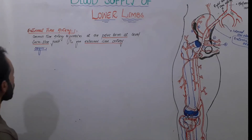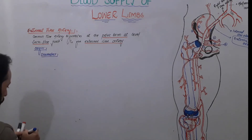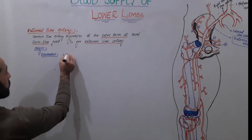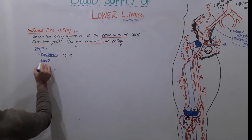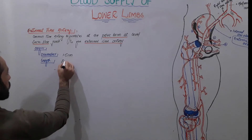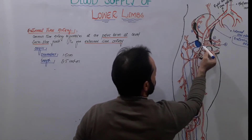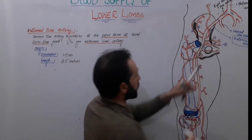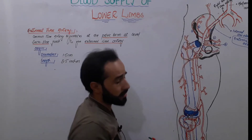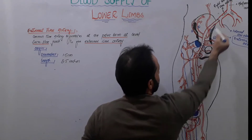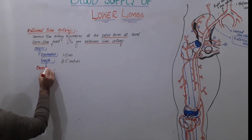What is the diameter of this artery? The diameter of the external iliac artery is about 1.5 centimeters. And what is the length of this artery? Its length is about 2.5 inches — from the point of origin up to the point where it continues as the femoral artery.